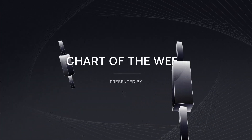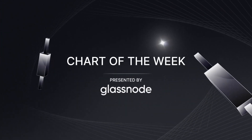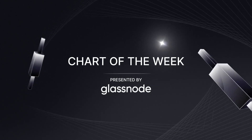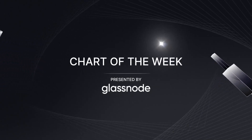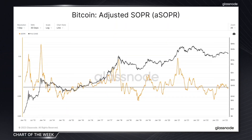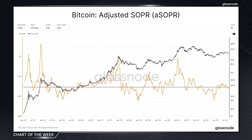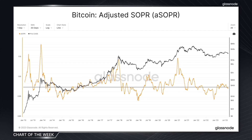The chart of the week is presented by Glassnode, the leading on-chain intelligence platform. In today's chart of the week, we explore the spent output profit ratio, or SOPR, a metric that tracks individual transaction profitability, and one that can serve as a broader measure of market sentiment.